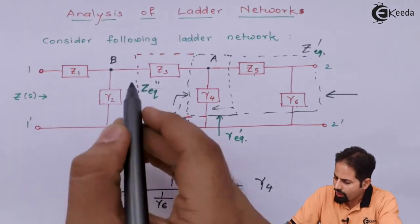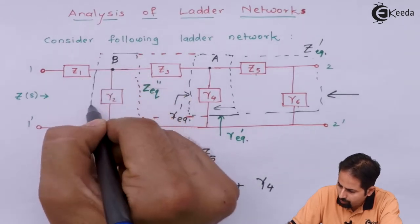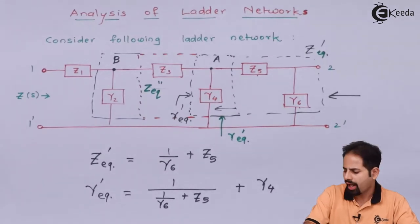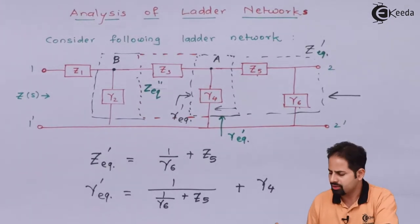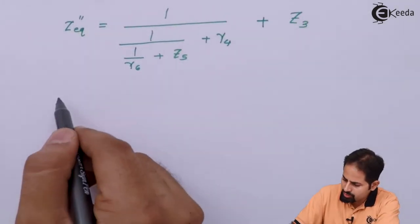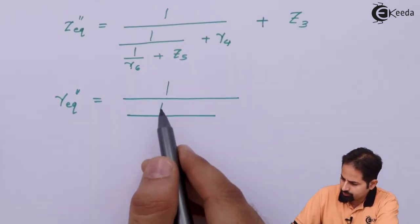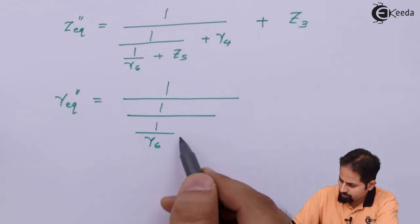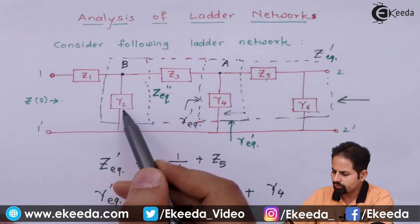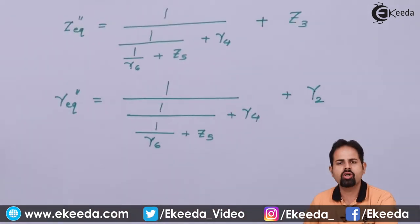Now when we want to include this Y2, suppose we want to include this Y2 also. So again, we will take the inverse and we will add Y2 because it is admittance. So we will take inverse of this particular term. So this is how I got Y equivalent double dash, but that is not my aim.